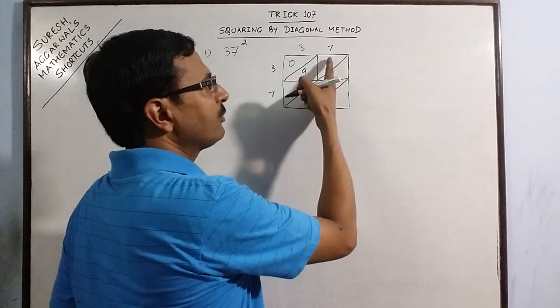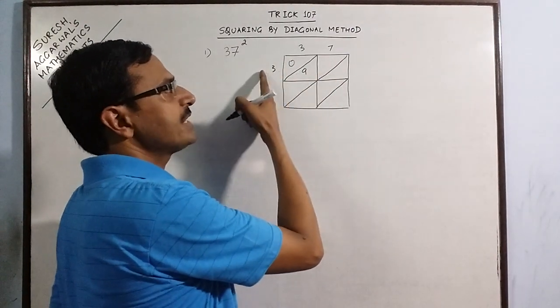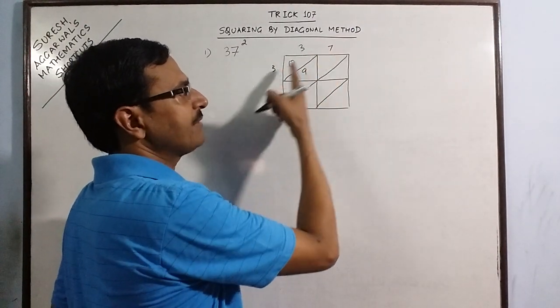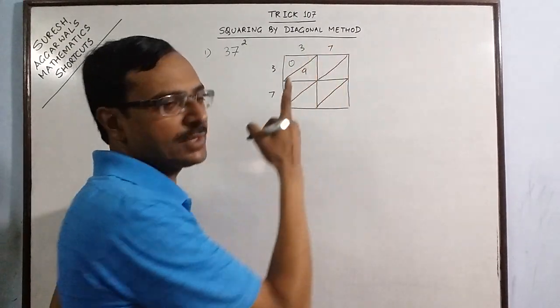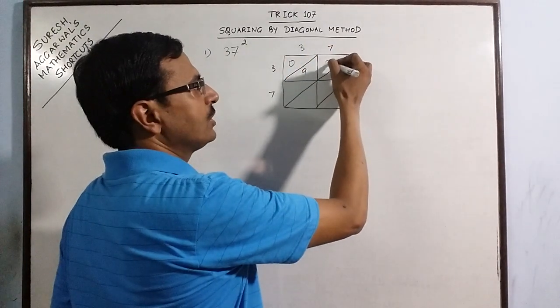Likewise, if you have to write a number here, then on the left side you have 3 and on the top you have 7. So 3 into 7 is 21. So just write 21.